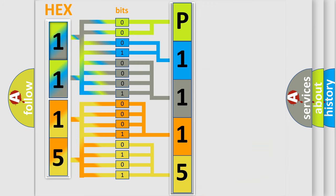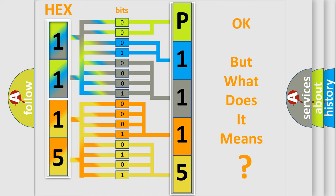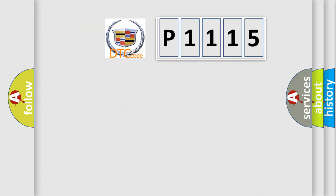We now know in what way the diagnostic tool translates the received information into a more comprehensible format. The number itself does not make sense to us if we cannot assign information about what it actually expresses. So, what does the diagnostic trouble code P1115 interpret specifically for Cadillac car manufacturers?